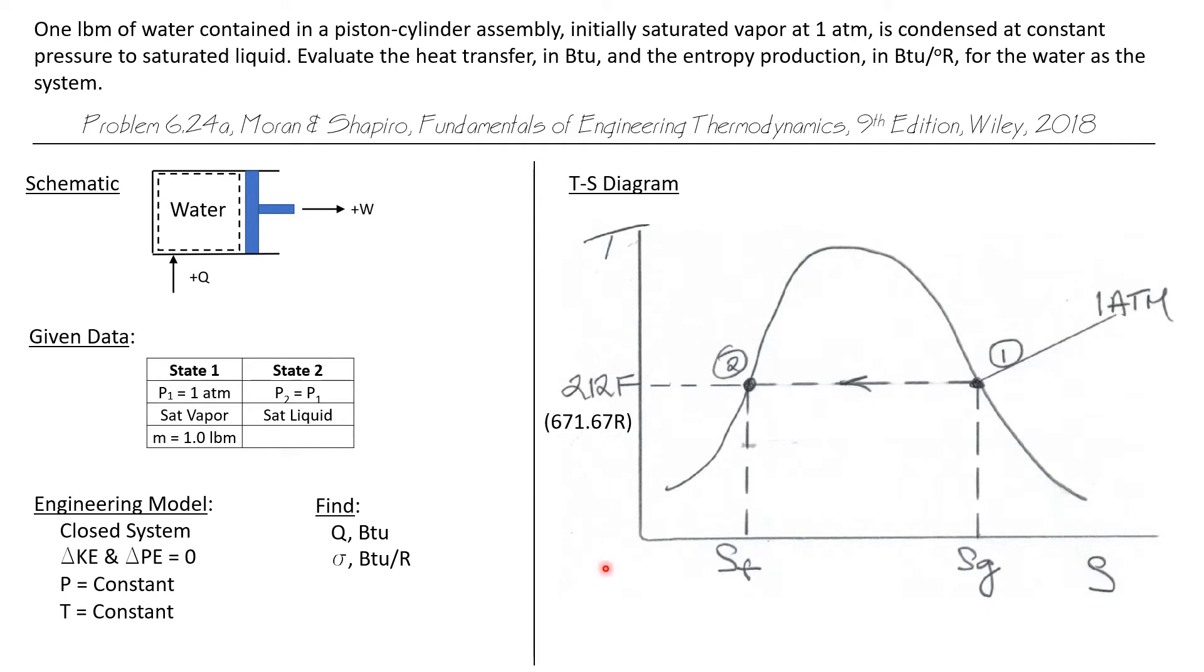So here's our TS diagram. This process takes place at one atmosphere, so I'll draw a one atmosphere constant pressure line across our vapor dome. State one is at one atmosphere as a saturated vapor. State two is one atmosphere as a saturated liquid.